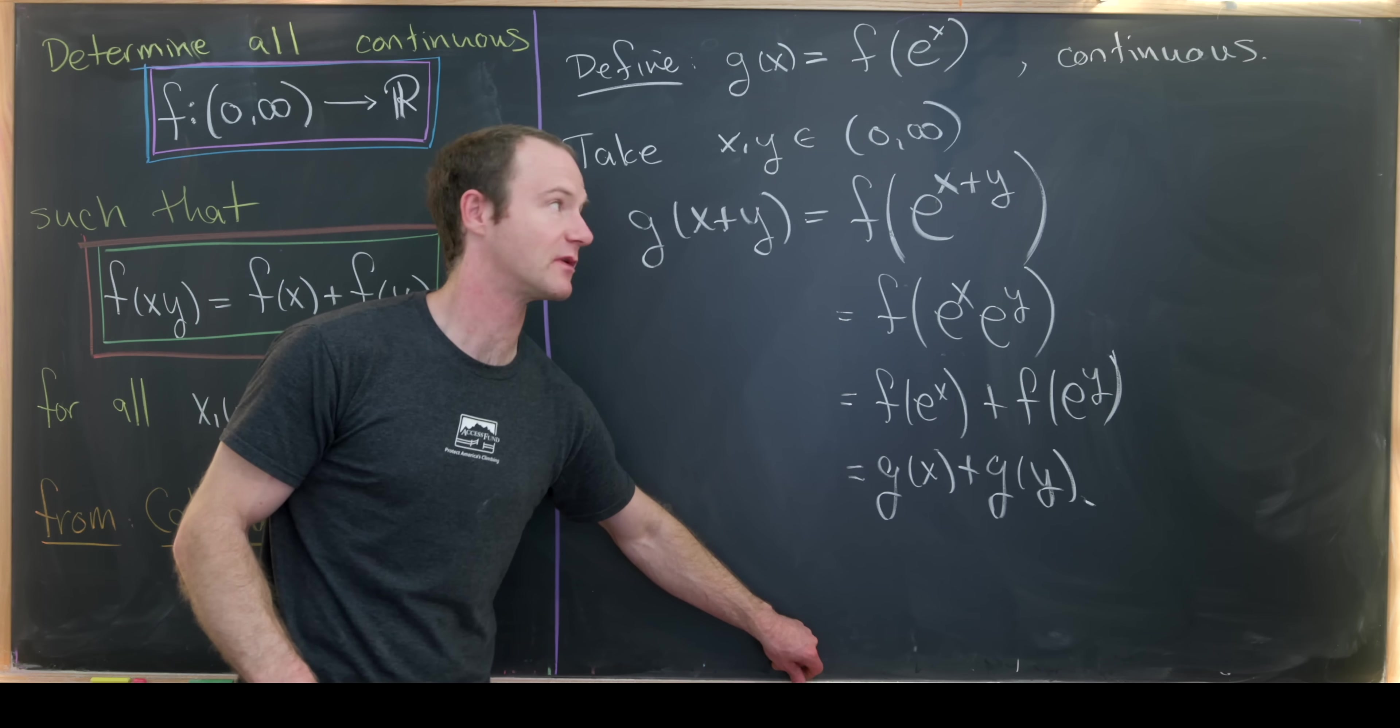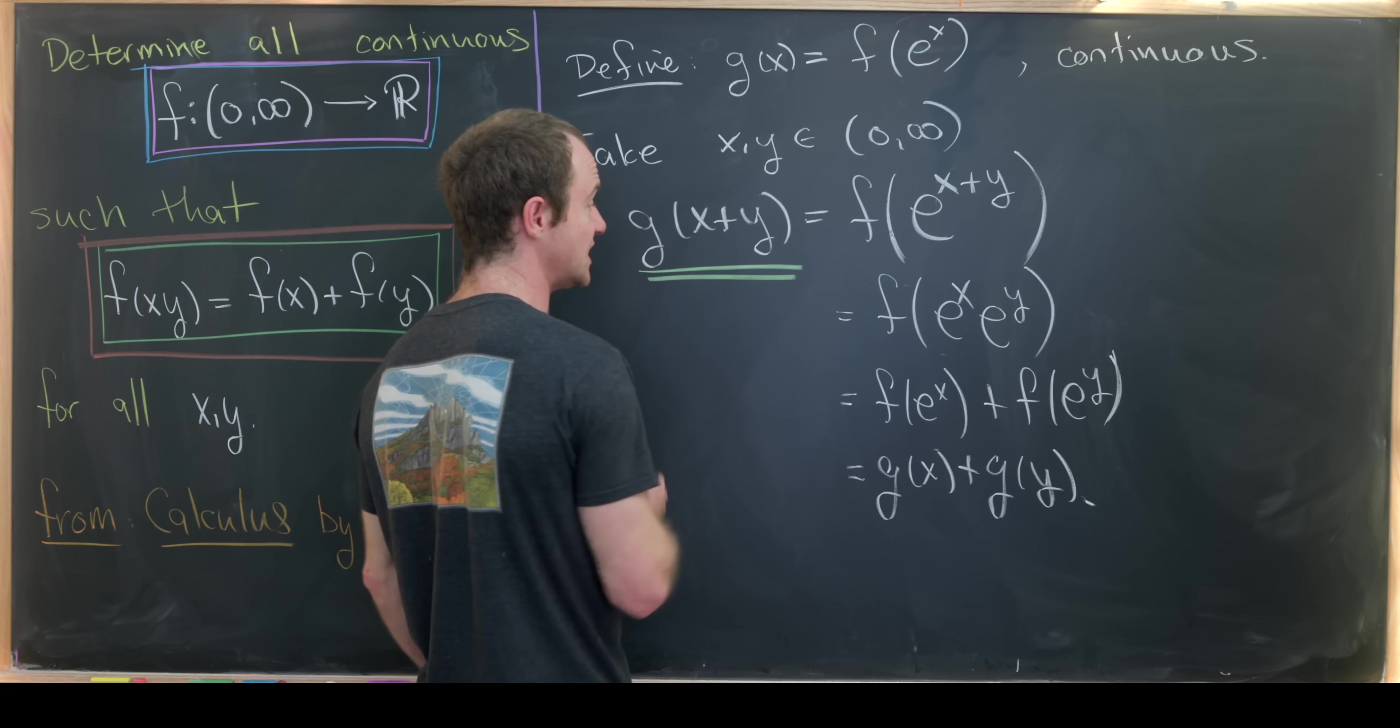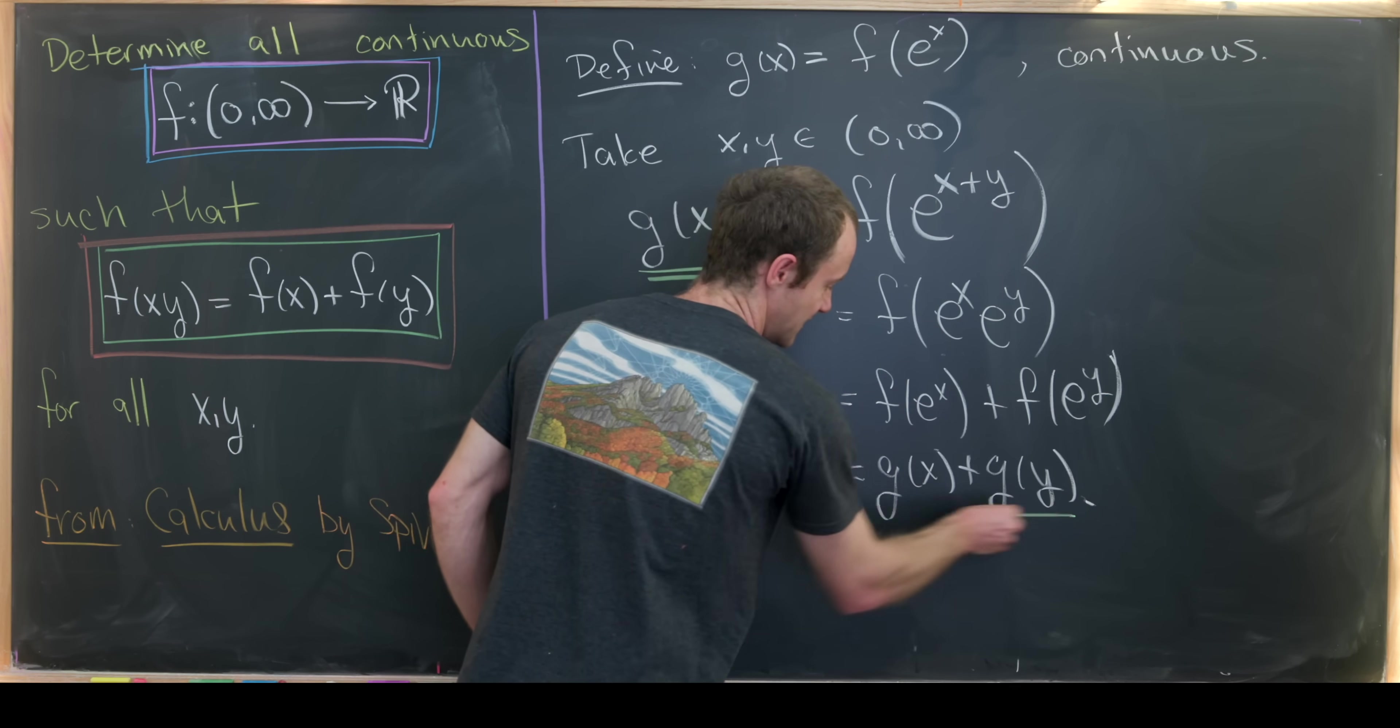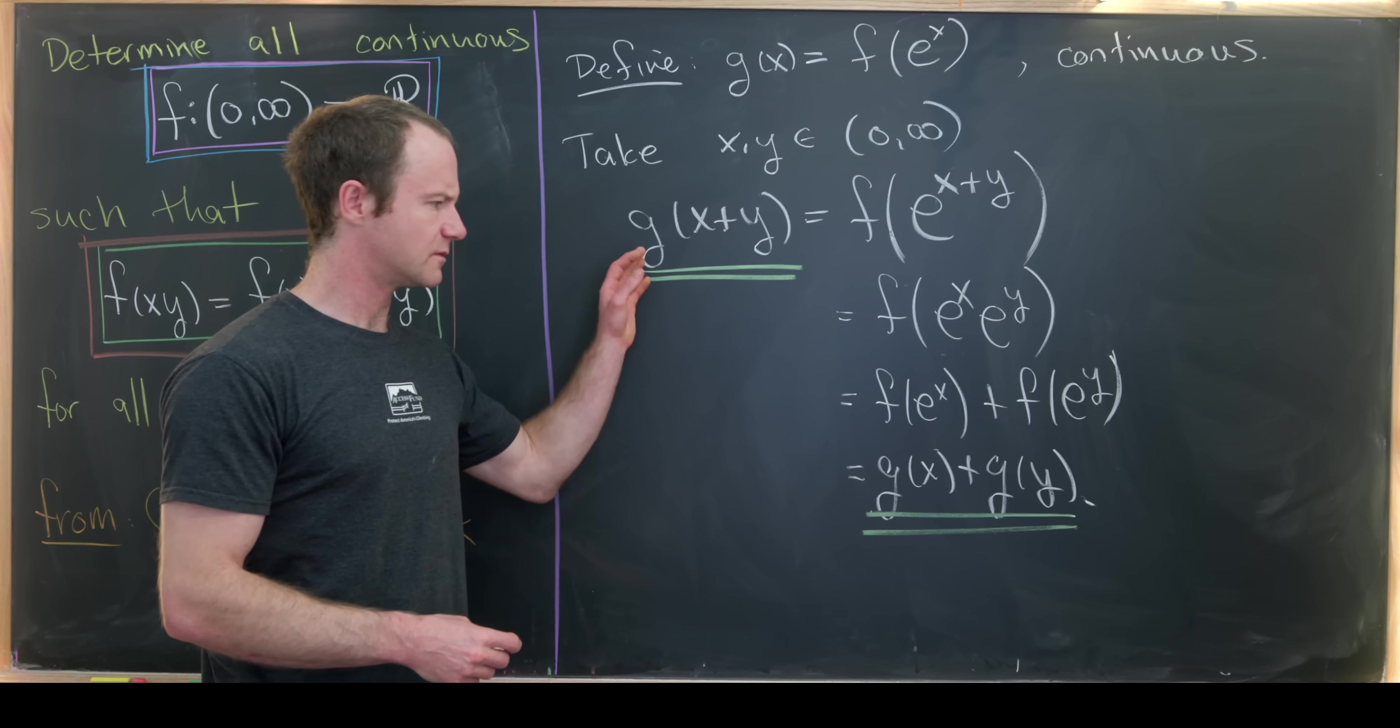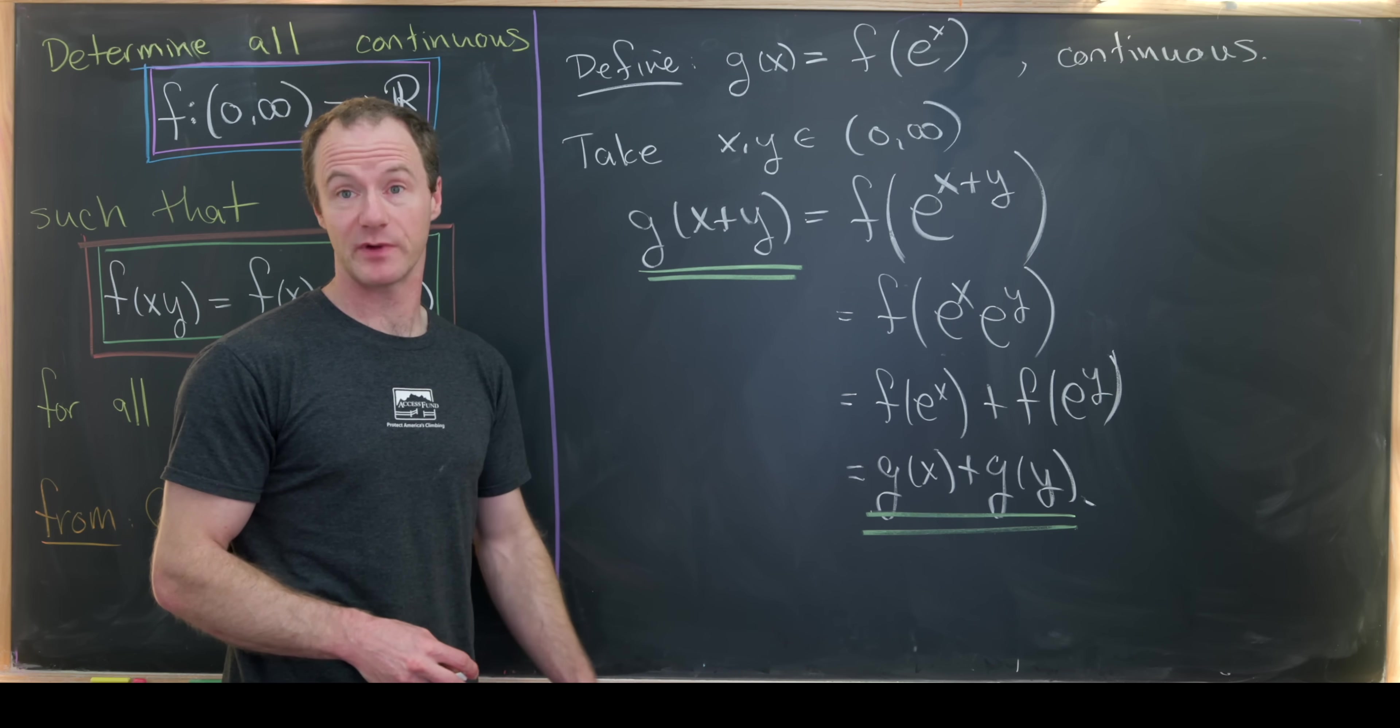So we've reduced this problem a little bit. And how we've reduced it is to classify all functions g that go from positive real numbers to real numbers, satisfying this functional equation right here. So g(x+y) equals g(x) plus g(y). In other words, it's a linear function. So it's pretty commonly known that all linear functions take a certain form. But we'll prove that coming up.